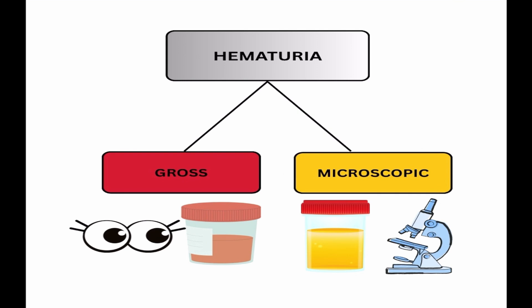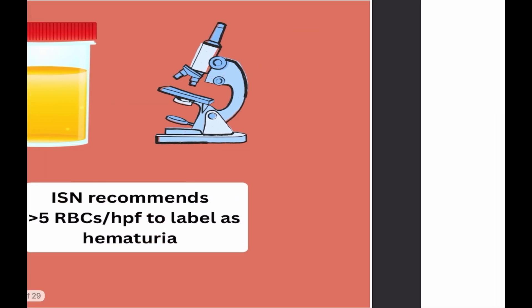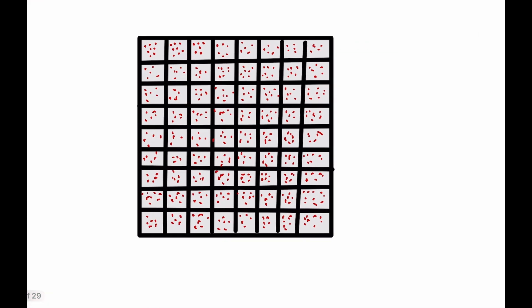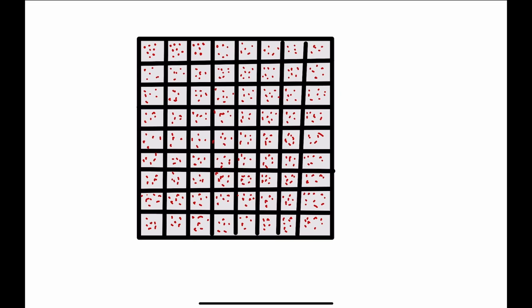The ISN recommends that you need to have more than five RBCs per high power field to label it as hematuria. When a sample of urine is seen under a microscope it looks like a grid, and each square of this grid is a high power field. When there are more than five red blood cells in each small square, that is when you call it hematuria.